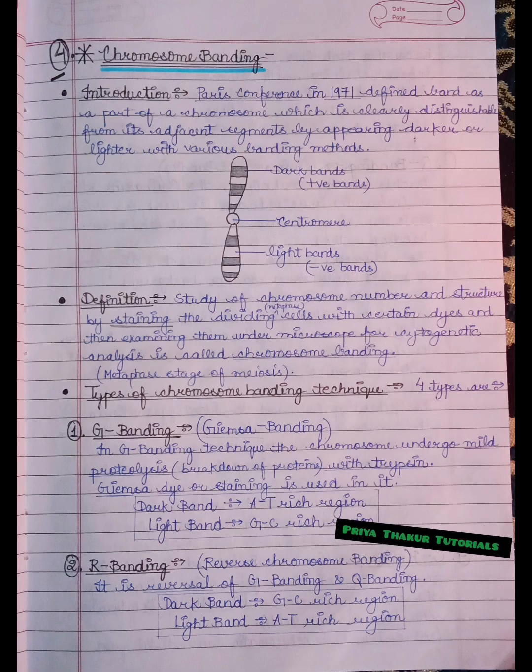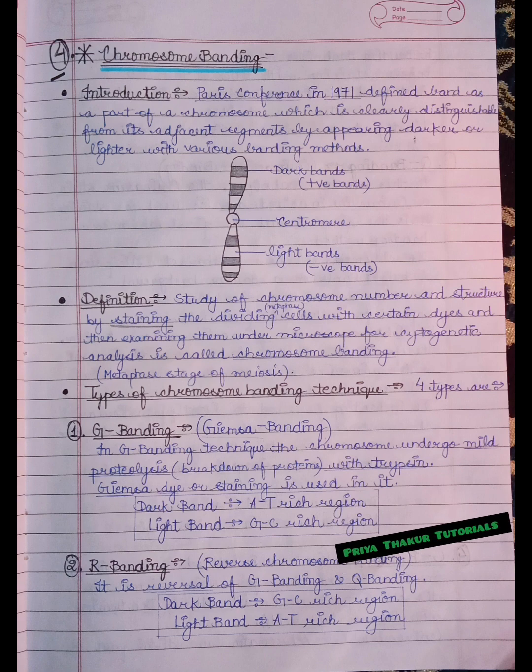Let us talk about the introduction to chromosome banding. Paris Conference in 1971 defined band as a part of a chromosome which is clearly distinguishable from its adjacent segments by appearing darker or lighter with various banding methods.